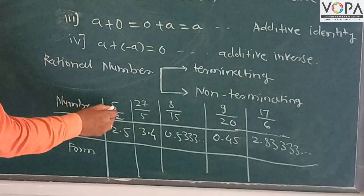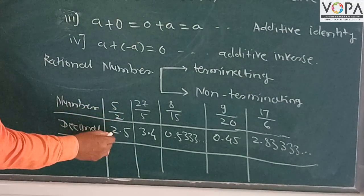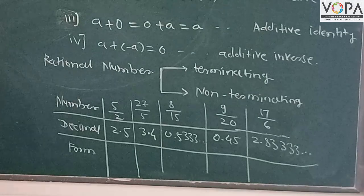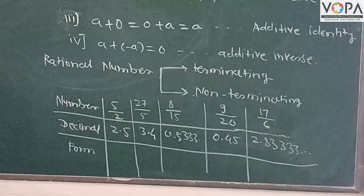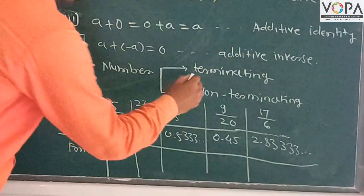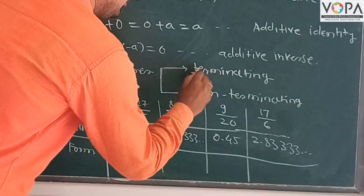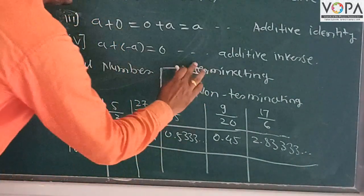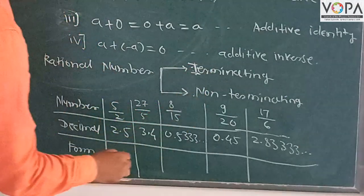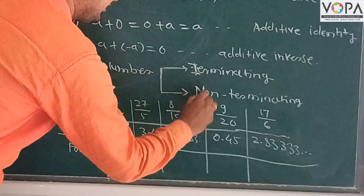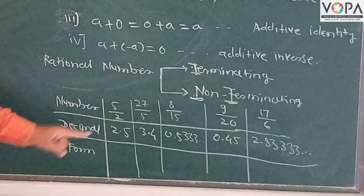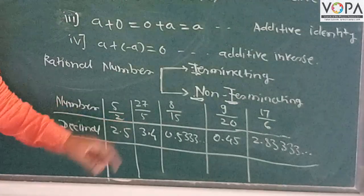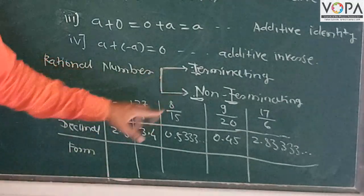Is it terminating or non-terminating? Terminating. Terminating is denoted by capital T and non-terminating is denoted by NT. 2.5 is a terminating term.